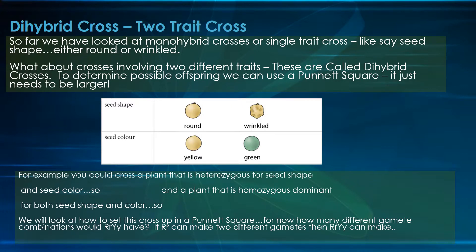We could cross a plant that is heterozygous for seed shape and seed color. So it's going to be both: big R, little r, and big Y, little y. Let's write out its genotype: big R, little r, big Y, little y.